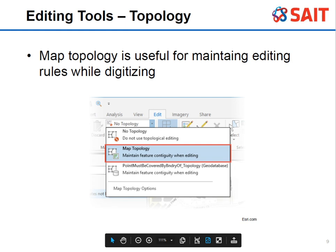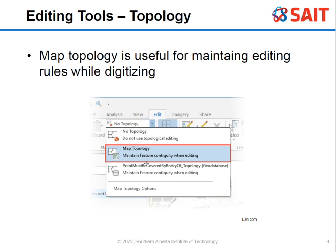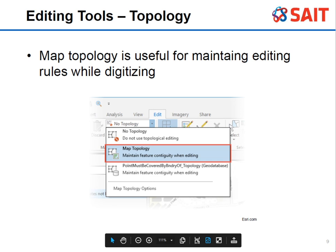Then there's topology. Topology is really good for maintaining rules when you're digitizing. You can use that in the dropdown — there's an option that says no topology, and there's also map topology. This allows us to maintain topology rules as we are digitizing, which keeps things much cleaner and reduces a lot of errors.